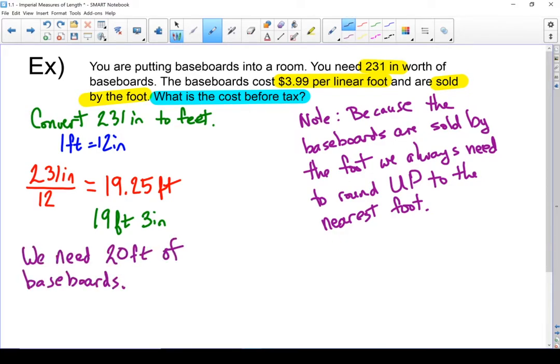Let's do that last calculation. 20 feet of baseboards times $3.99 per foot gives us a total cost before tax of $79.80. Finish it with a sentence: the baseboards will cost $79.80.